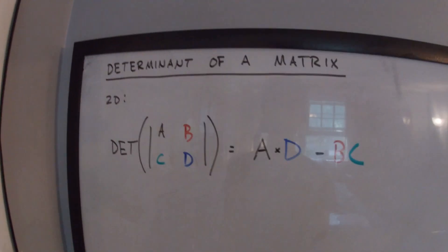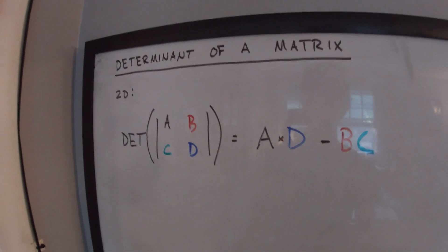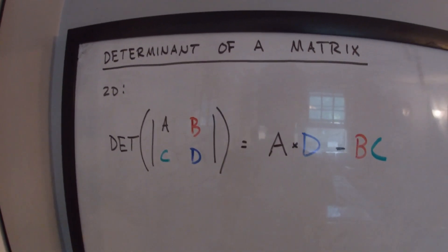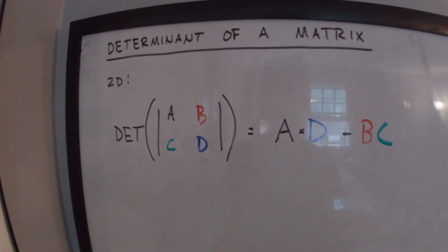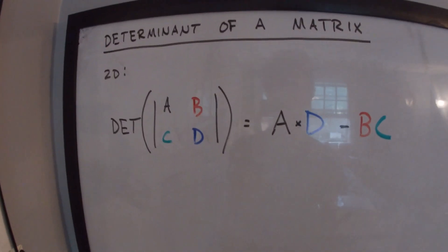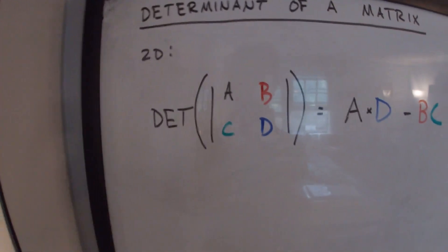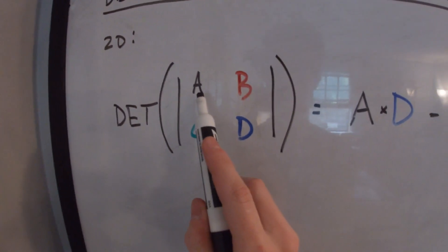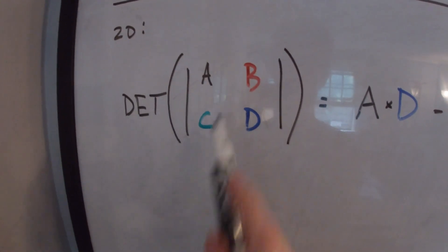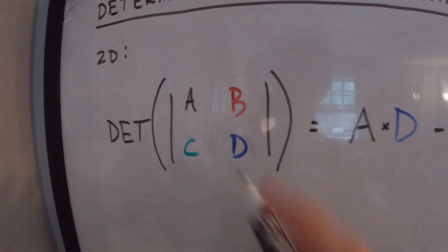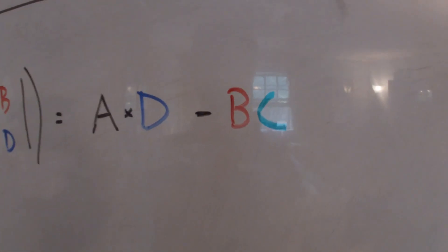Something critical to know when taking a moment in 3D is how to take the determinant of a matrix in both 2D and 3D. The determinant of a matrix is just a scalar number that results from a matrix. In 2D it's relatively easy. If we had a matrix A, B, C, D, the determinant is defined as A times D minus B times C.